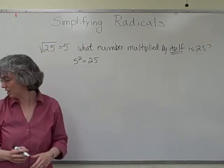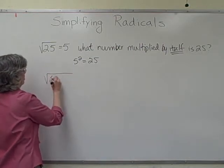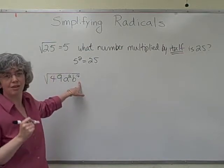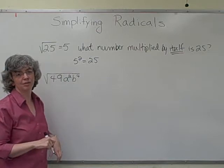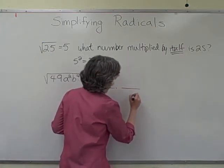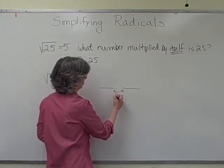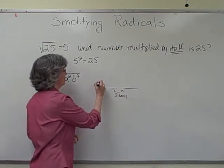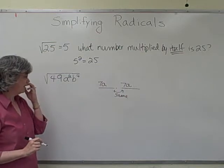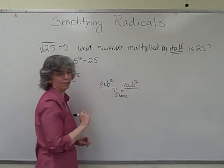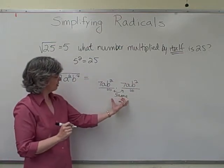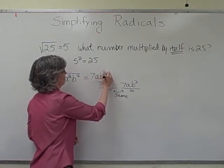We sometimes like to make it more exciting by putting in some letters. When we put in letters in elementary algebra, we call them variables, and we always choose that our variables are non-negative. So 49 is 7 times 7, A squared is A times A, and B to the 4th is B squared times B squared — or four Bs giving us B squared. So here we get 7, A, B squared.